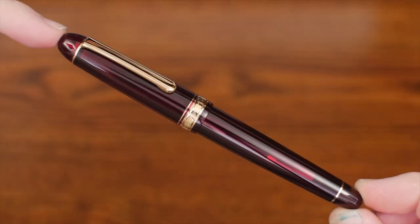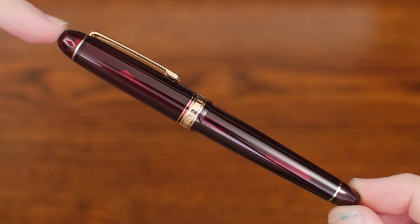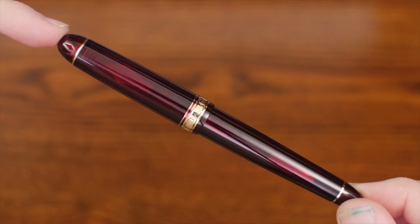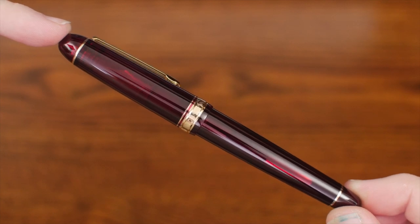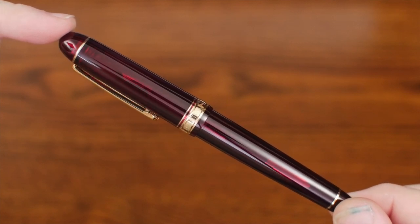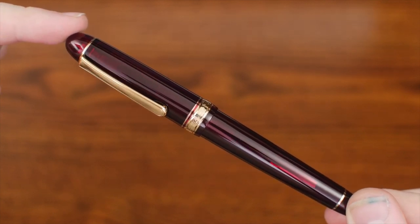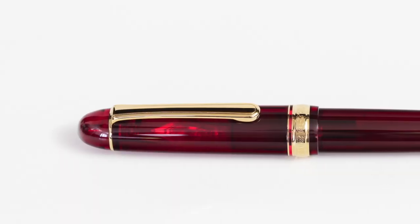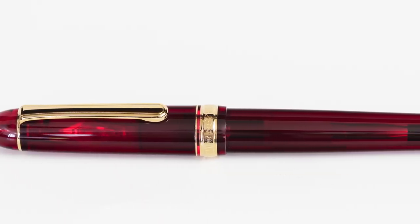The Bourgogne, featured in this review, is made from a gorgeous translucent burgundy-colored resin. The color is deep and rich and is paired perfectly with gold-plated trim. In most lighting, you may not notice the translucency, but occasionally you can catch the highlight of the chrome-plated converter in the barrel or the nib inside the cap.